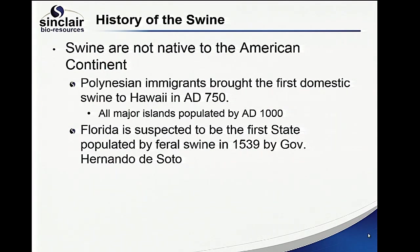Swine are not native to the American continent. Polynesian immigrants brought the first domestics to Hawaii around 750 AD. Swine have always been viewed as an agricultural animal raised for meat. It wasn't until the early 1940s and 50s that smaller breeds of feral swine were being used for research in facilities where they didn't have a lot of room. They noticed domestic pigs were growing too fast, so several breeds have been purpose-bred for research. The Yucatan, for example, started in the US with just 25 animals brought to the University of Colorado.